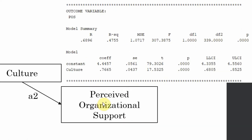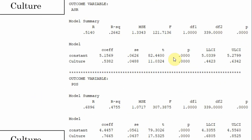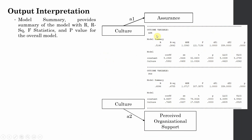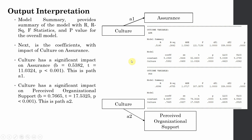The other mediating variable, perceived organizational support, is also influenced by culture. Both effects A1 and A2 are significant — check the p-values and the lower and upper confidence intervals. Culture affecting perceived organizational support is significant as well. Both path A1 and path A2 are the path coefficients, and both paths are significant.